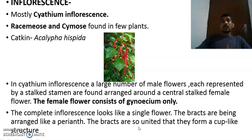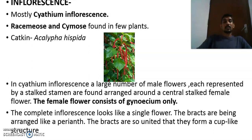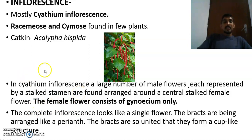The inflorescence is mostly cyathium. In a few plants, racemose and cymose inflorescences are also found, but mostly cyathium inflorescence is present. In the case of Acalypha hispida — 'poochavali' — the inflorescence is a catkin. The cyathium inflorescence has male and female flowers as already explained.